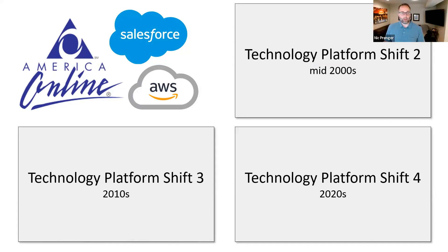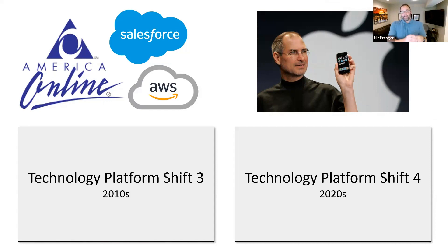Technology platform shift number two: mid-2000s. We have the internet — what happened in 2007? The iPhone. We have the internet, everything moves online, software becomes a subscription. Then in 2007 we have the mobile phone — really the iPhone. Up to that point phones had screens, but this was when the world moved to mobile. We've now passed the tipping point where more people access the internet through a mobile device than through a desktop or laptop.